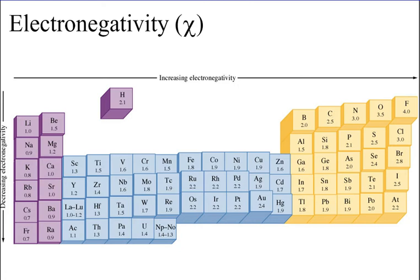Fluorine has the greatest electronegativity because it has the smallest radius and greatest effective nuclear charge. This means fluorine's valence electrons are very heavily attracted by its nucleus because the nucleus is very near its valence electrons.